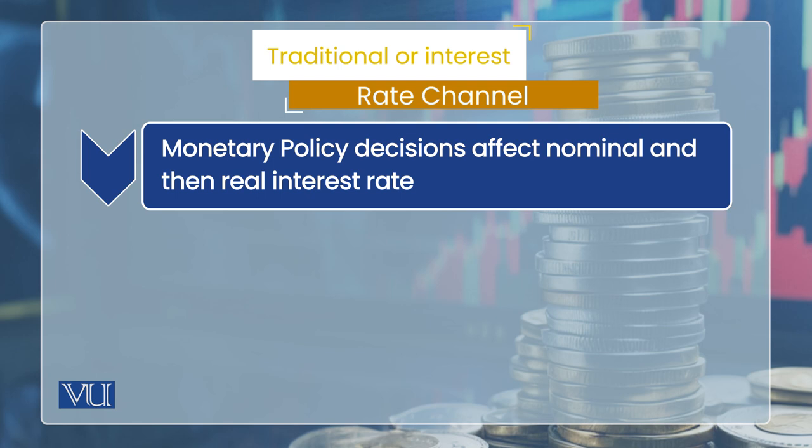The policy decisions are used to set the nominal interest rate. When the State Bank of Pakistan announces its policy rate, it is a target, and that target interest rate is nominal. But what is in the mind of central bankers is the real interest rate — changing the nominal interest rate to actually change the real interest rate.